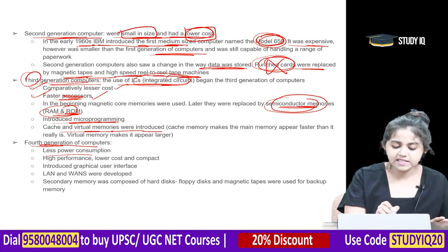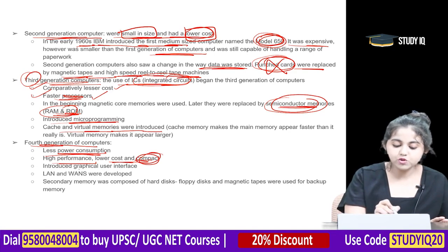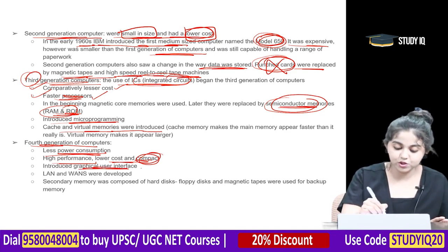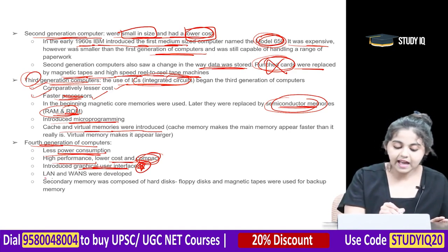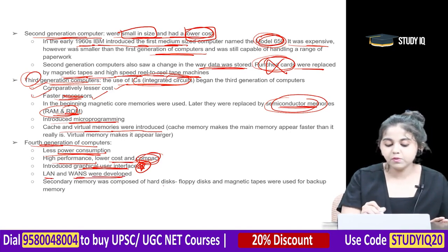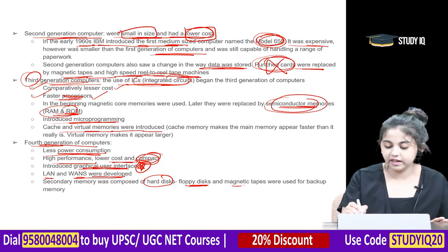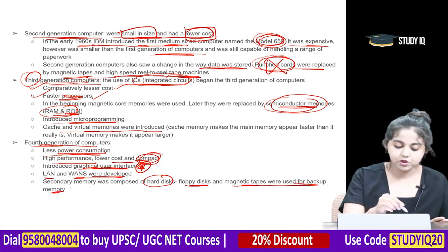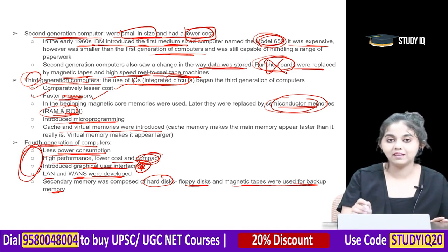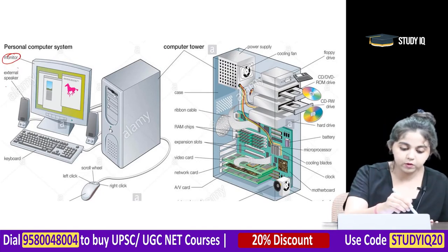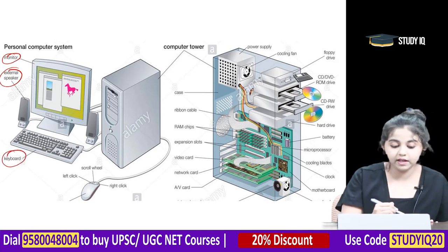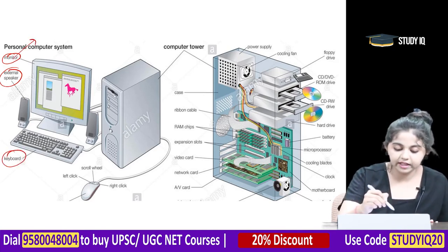Fourth generation computers had less power consumption, high performance, lower cost, and were very compact. They introduced graphical user interface (GUI). LAN and WANs were developed. Secondary memory was composed of hard disks, floppy disks, and magnetic tapes used for backup memory. They were even more compact than third generation computers.